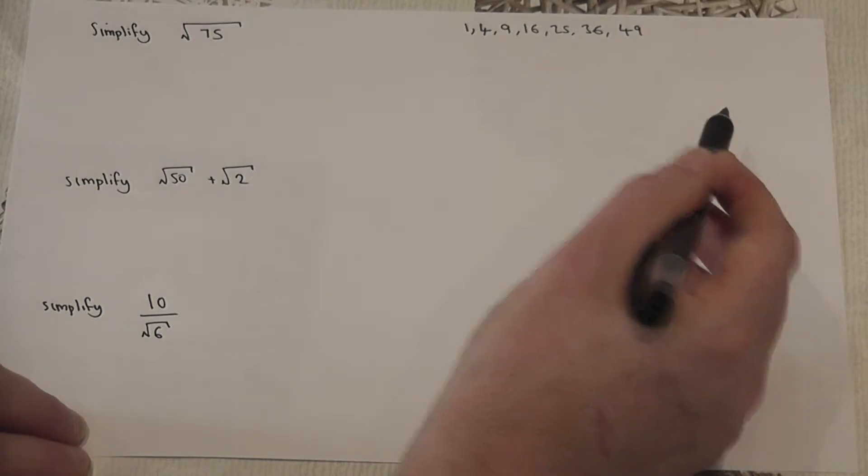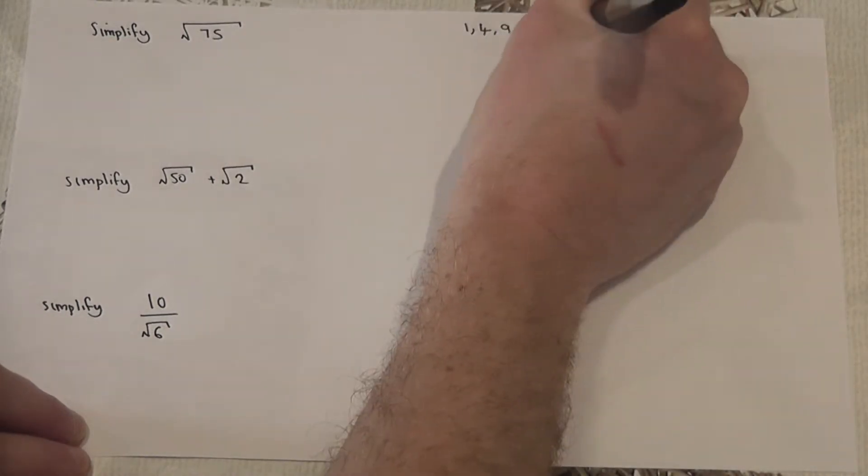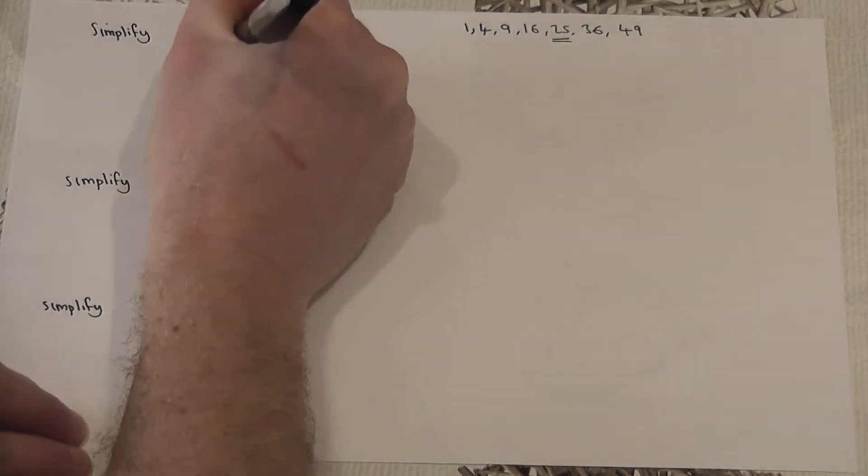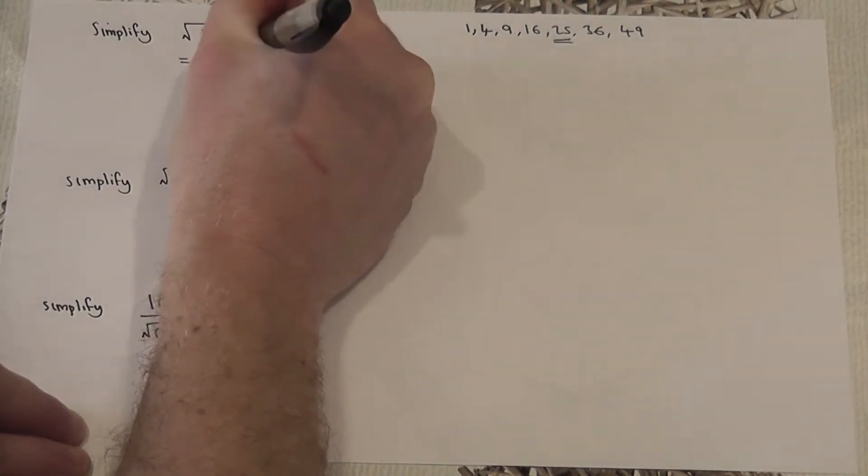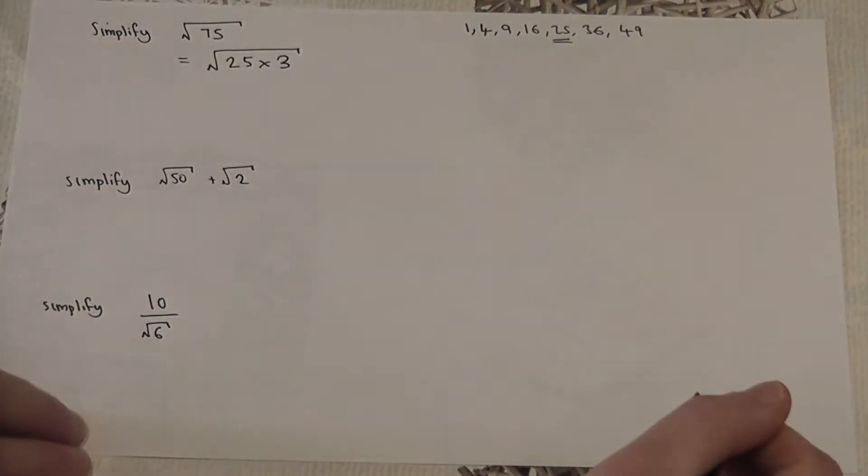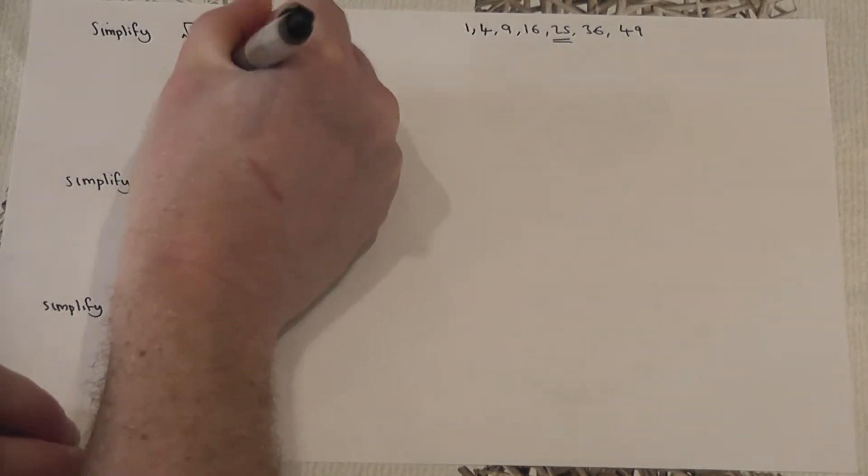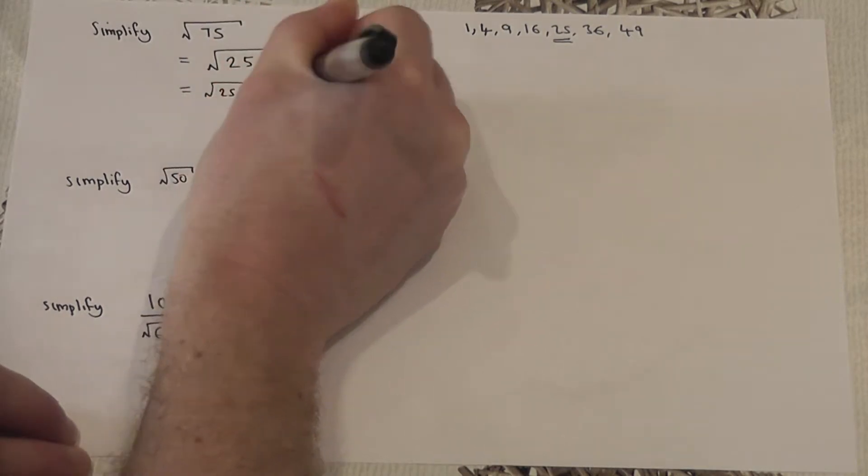The largest possible one that goes into 75 is 25, and I can write this as square root of 25 lots of three. I then try to square both these numbers separately—that's why I try to root 25 and I try to square root three.